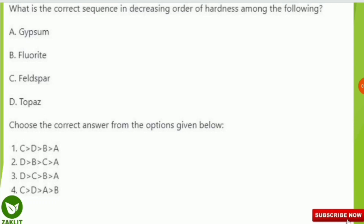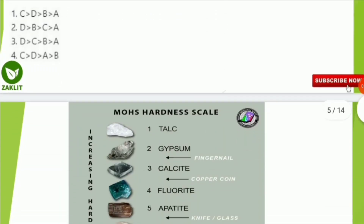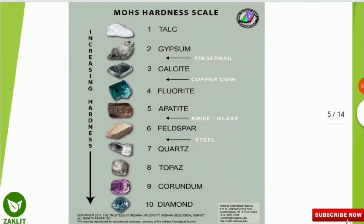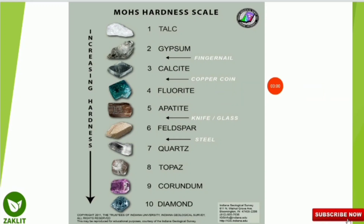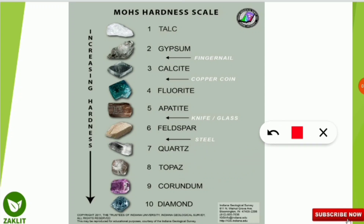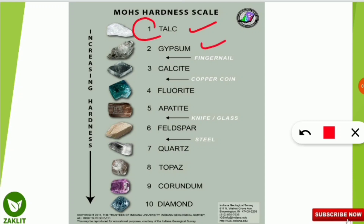I will not tell the answer directly — first we will go for the concept. The hardness scale is measured using the Mohs scale of hardness. Mohs scale defines hardness from 1 to 10: talc is the softest with hardness 1, followed by gypsum with 2, calcite with 3, fluorite with 4, and apatite with 5, feldspar with 6.